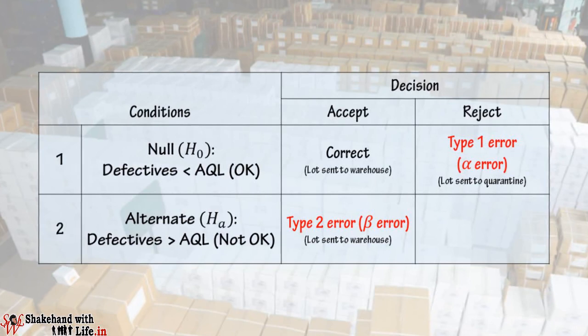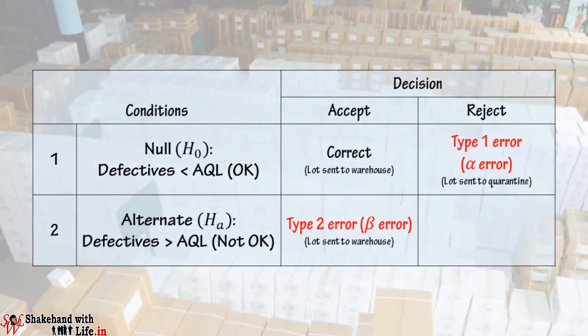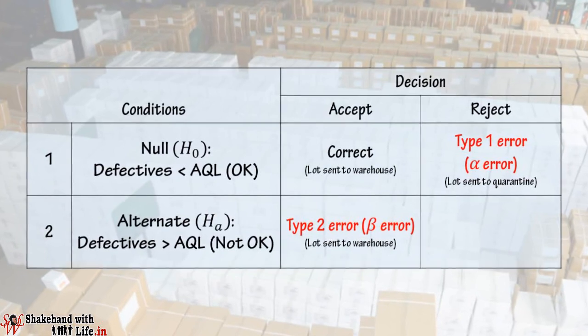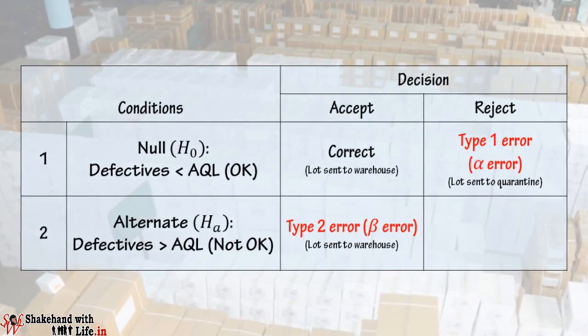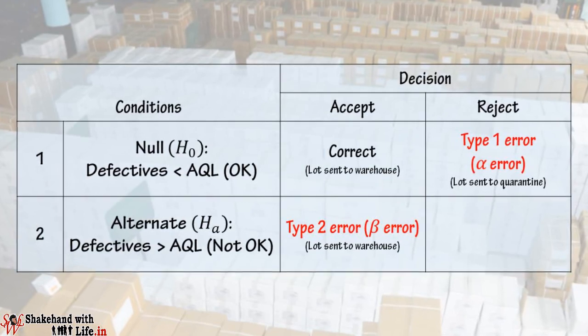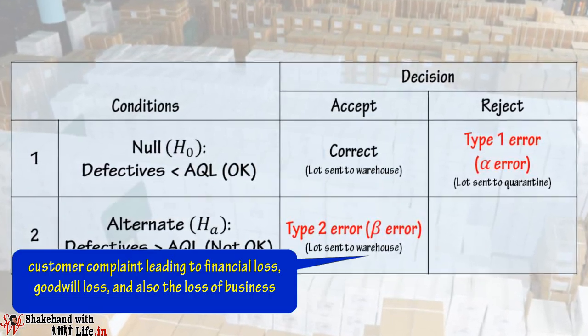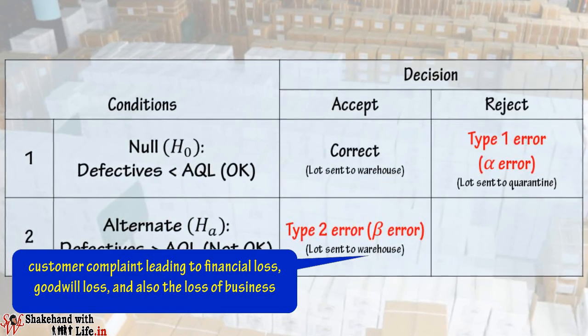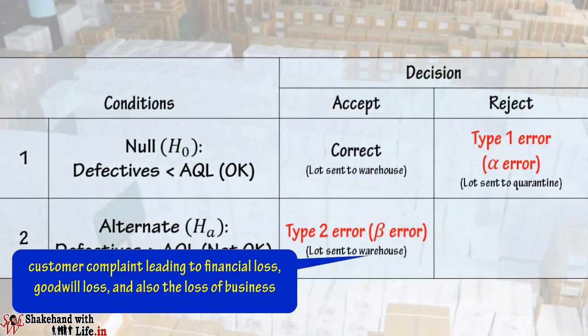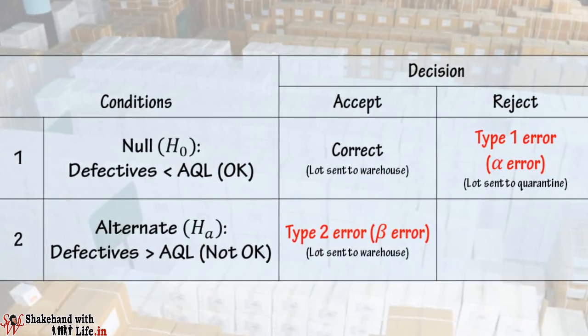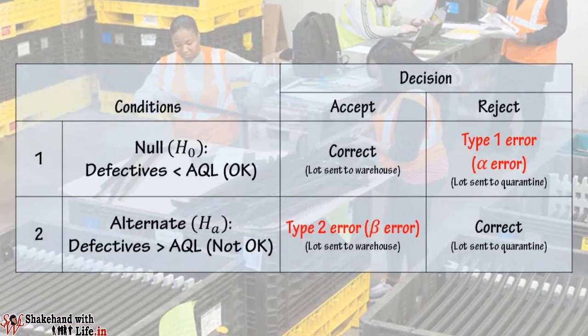Now the second condition: if the lot with defectives more than the acceptance quality level is accepted by the quality checker and released to the warehouse for dispatch, the quality checker has committed a Type 2 error or beta error. As a result, the quality checker created the opportunity of customer complaint, which could lead to financial loss, goodwill loss, and also loss of business from the customer. But if the quality checker rejected the lot and sent it to quarantine, then it will be a correct decision.